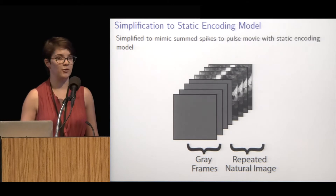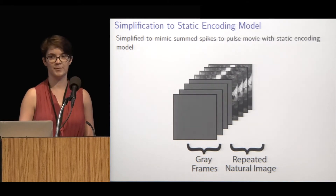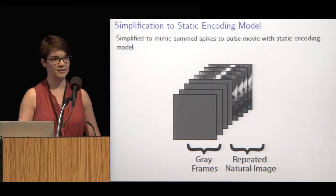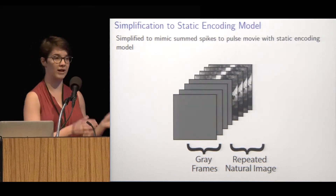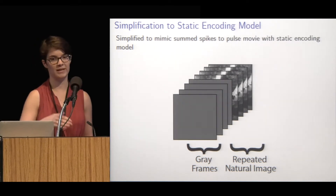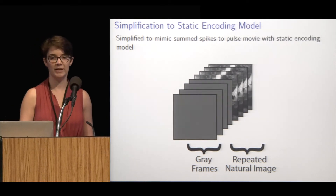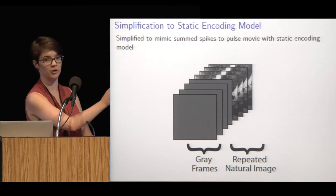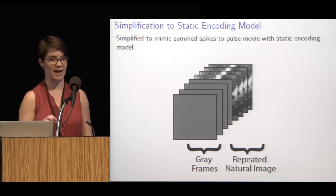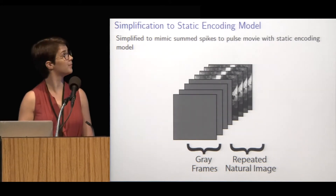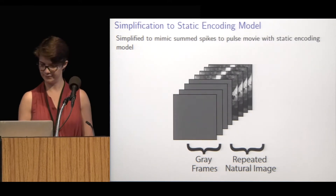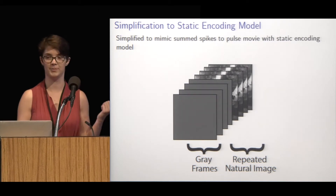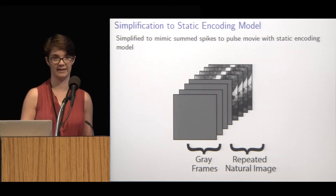We wanted to start with decoding static images instead of movies because that's a less complicated problem. We designed an experimental stimulus consisting of pulse movies — each pulse movie consists of gray frames followed by one natural image repeated for multiple frames. We then decode that natural image from a summed spike measure by summing the spikes that occurred in those repeated frames and using that response to decode the image. We used simple approximations to transfer the full spatiotemporal model to a simple static encoding model.